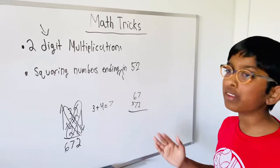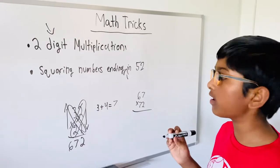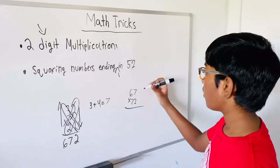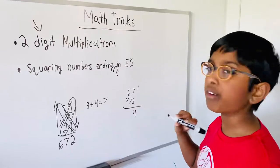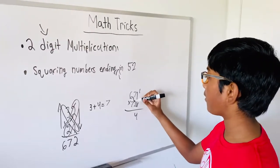Guys, this may be a little bit challenging. So seven times two is obviously 14, right? So 14. We'll write four there and carry forward the one. Then remember the X method again.